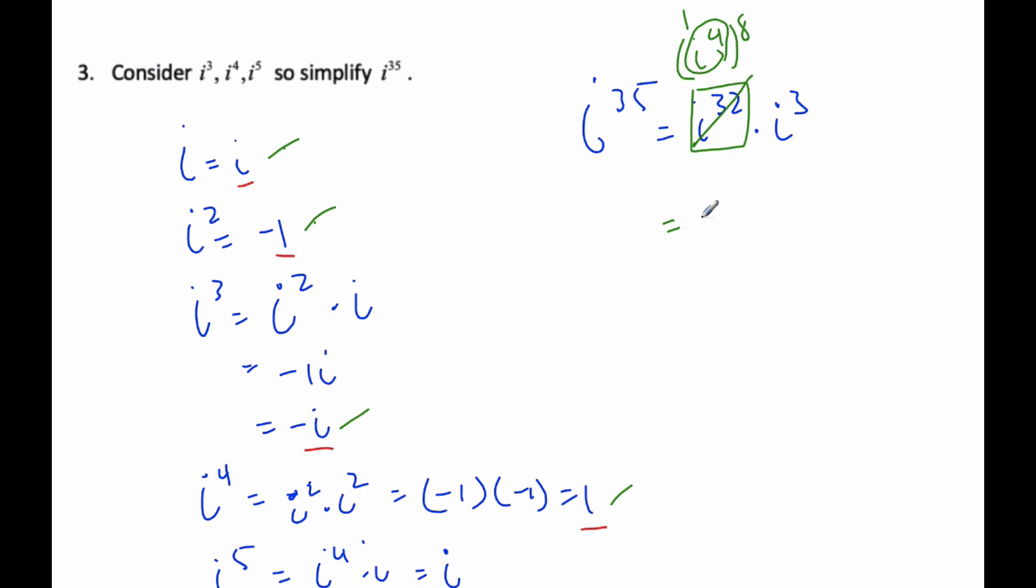And so I get i cubed, which I know is i squared times i, which is negative i.